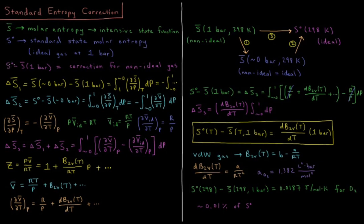The standard state molar entropy minus the molar entropy at one bar is equal to the correction for a non-ideal gas at that temperature. What we want is the entropy change going from a non-ideal gas at one bar and 298 Kelvin to an ideal gas in the standard state at 298 Kelvin.